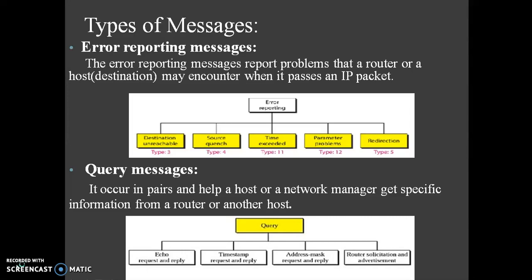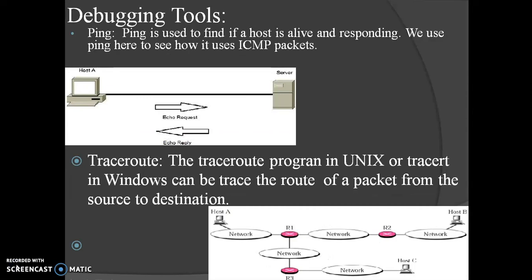The next block is address mask request and reply. A host may know its IP address but may not know the corresponding mask. The next block is router solicitation and advertisement. A host that wants to send data to a host on another network needs to know the address of routers connected to its own network. There are two debugging tools: ping and traceroute. Ping is used to find if a host is alive and responding, and we use it here to see how it uses ICMP packets. The traceroute program — traceroute in Unix or tracert in Windows — can trace the route of a packet from the source.